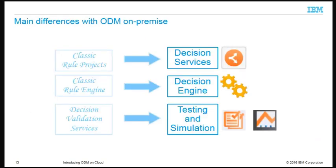To streamline the ODM on Cloud product, the latest and most up-to-date features have received priority. As a consequence, some legacy features from the ODM standard on-premise version have not been made available in ODM on Cloud. For example, the decision service is the only type of rule project for ODM on Cloud. If you have existing classic rule projects created in ODM standard on-premise, you can migrate them to decision service projects using the migration tool in Rule Designer. Similarly, the decision engine is the only engine available in ODM on Cloud. For rule validation activities, you use the testing and simulation capabilities in Decision Center Business Console; the legacy DVS feature is not supported in ODM on Cloud.